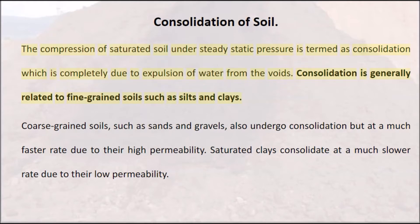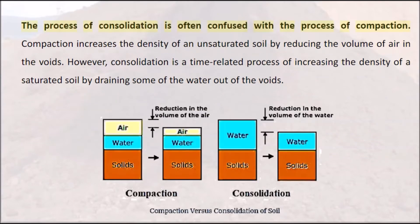Coarse-grained soils such as sands and gravels also undergo consolidation but at a much faster rate due to their high permeability. Saturated clays consolidate at a much slower rate due to their low permeability. The process of consolidation is often confused with the process of compaction. Compaction increases the density of an unsaturated soil by reducing the volume of air in the voids. However, consolidation is a time-related process of increasing the density of a saturated soil by draining some of the water out of the voids.